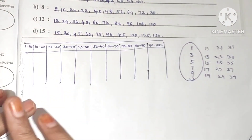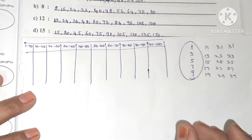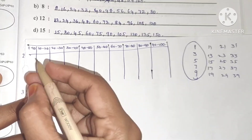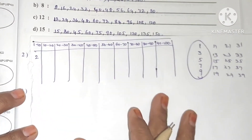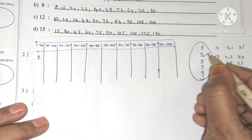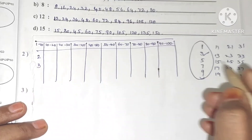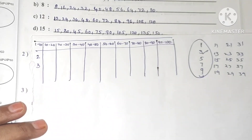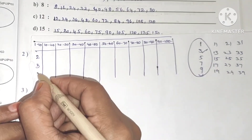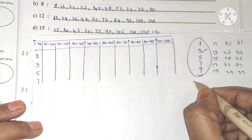Prime numbers are odd, except for 2. So 2 is the only even prime number. Also, 1 is not a prime number. Numbers like 5, 7 — we check if they appear in any multiplication table.